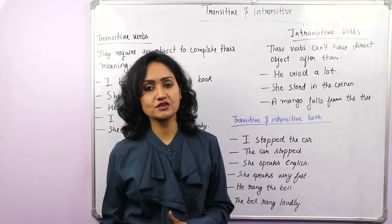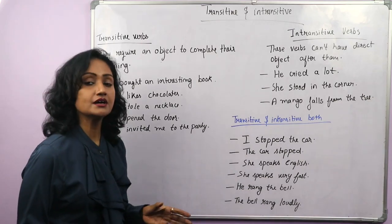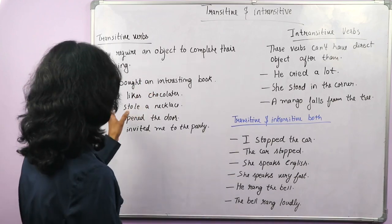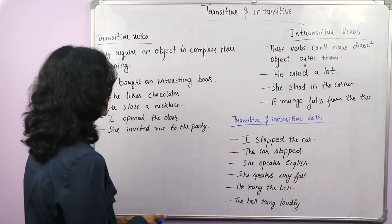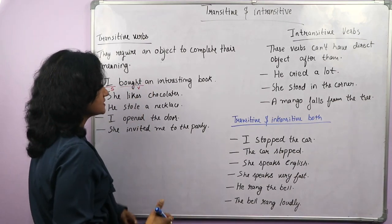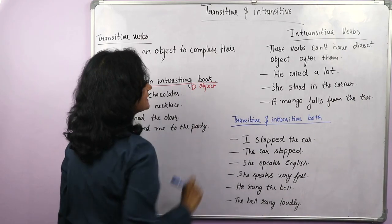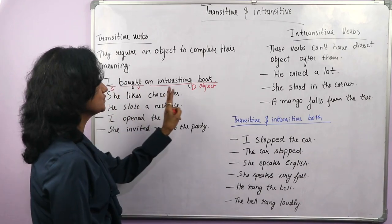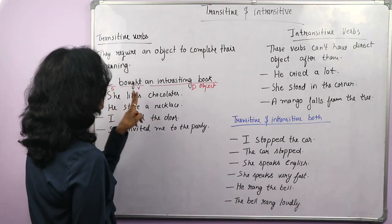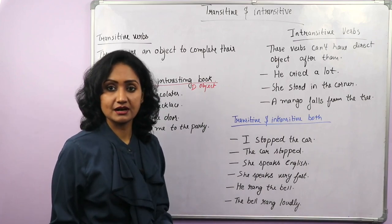Next is transitive and intransitive verbs. Transitive verbs are those verbs which require an object to complete their meaning — you need an object, otherwise they sound incomplete. For example, 'I bought an interesting book' — I is the subject, bought is the verb, and an interesting book is the direct object. If you remove the object — 'I bought' — it doesn't make sense. I bought what? I bought a book, a car — you need something after it.